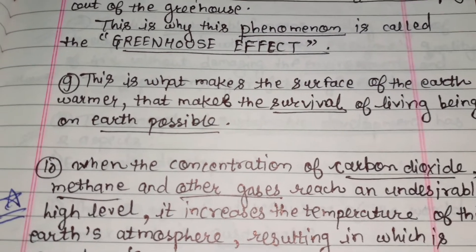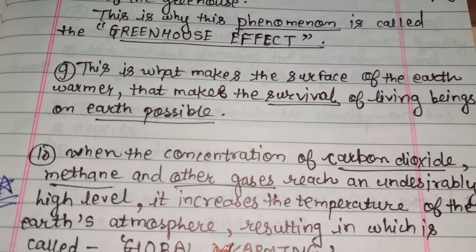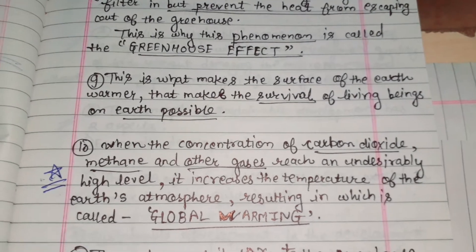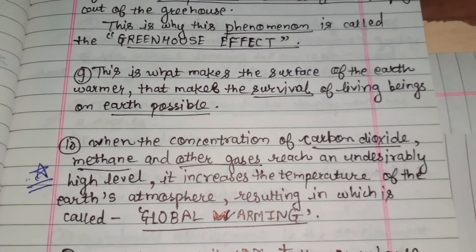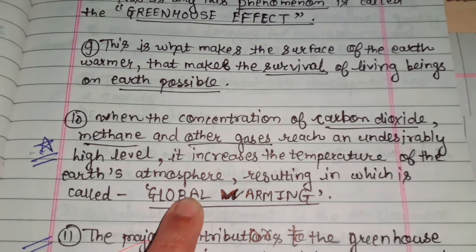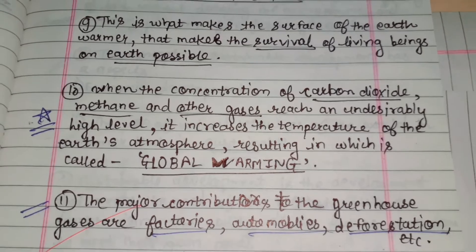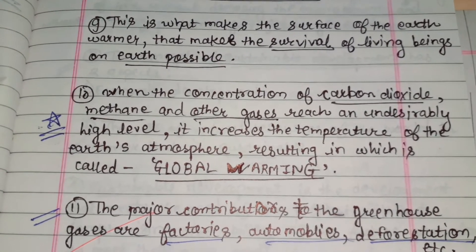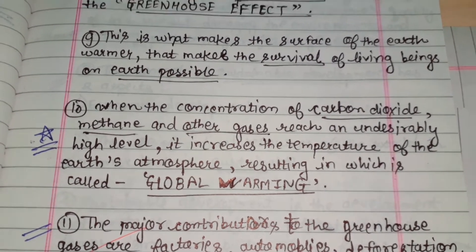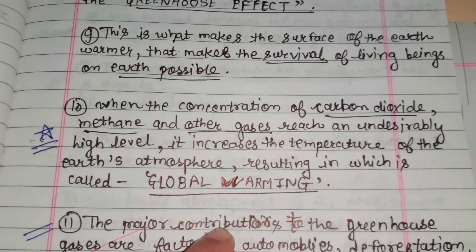This is what makes the surface of the earth warmer and makes the survival of living beings on the earth possible. When the concentration of carbon dioxide, methane, and other gases reaches an undesirably high level, it increases the temperature of the earth's atmosphere — and this is called global warming.